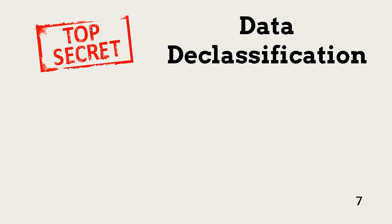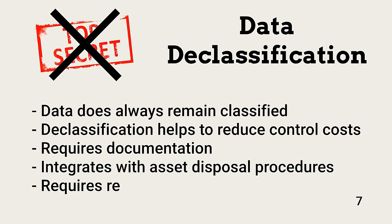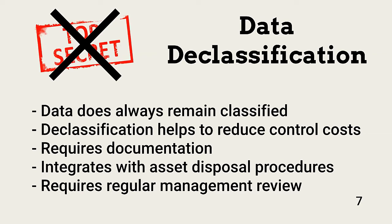Data and related assets do not always remain at the same classification level. This can be caused by expiration of data value or so the organization can more safely perform business tasks. Once data is declassified, it does not require the same level of protection, which reduces protection costs. Declassification procedures should be documented and integrated with asset disposal procedures. Finally, data classification needs annual or more frequent review.